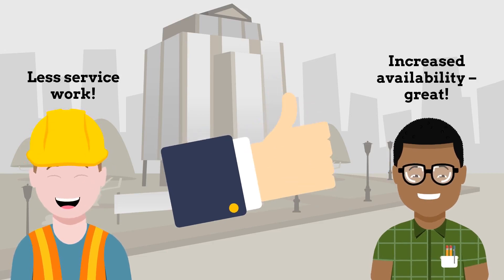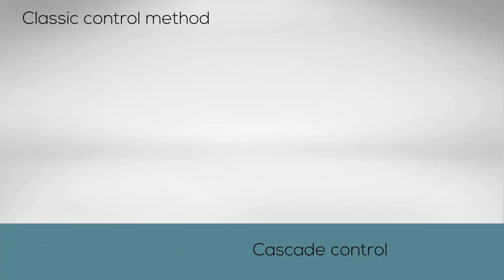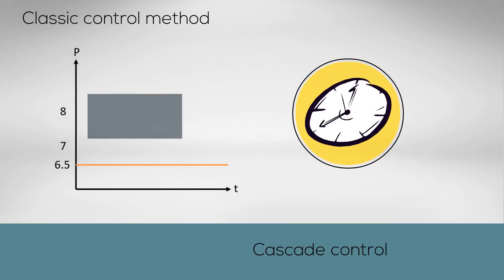Even with heavily fluctuating demand. Most central compressed air management systems are based on the concept of cascade control, in which the compressors are switched on and off in a fixed sequence.